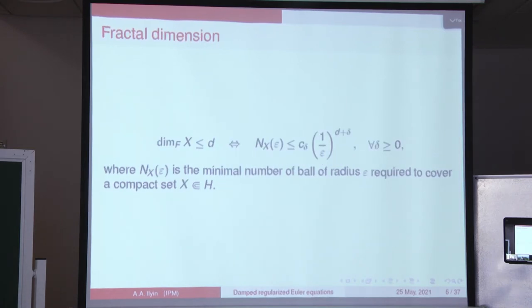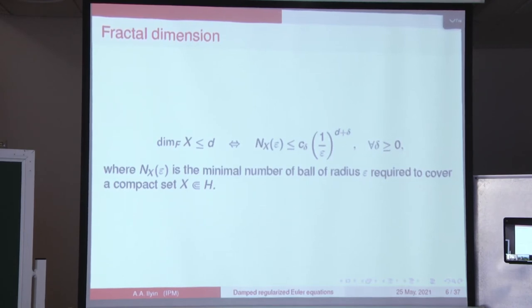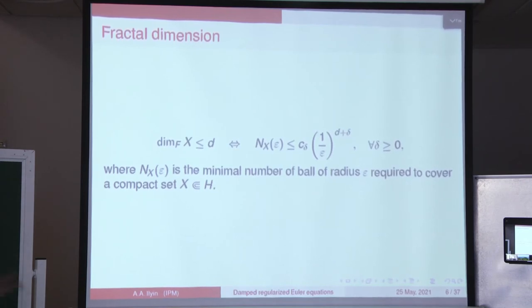What is the fractal dimension of a compact set in a Hilbert or Banach space H? We say that a compact set X has fractal dimension less than D if the minimum number of balls of radius epsilon required to cover this set satisfies this bound — roughly speaking, it behaves like epsilon to the negative D, which is very natural if you think of the geometric definition of dimension, and in this case they coincide.